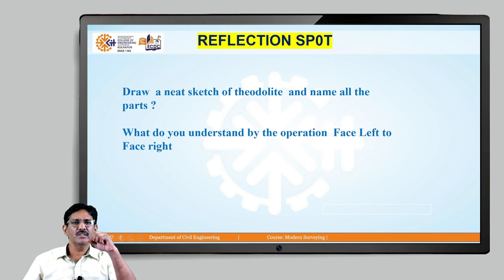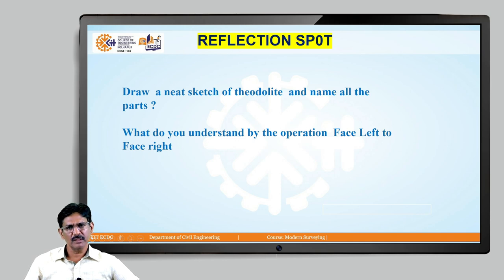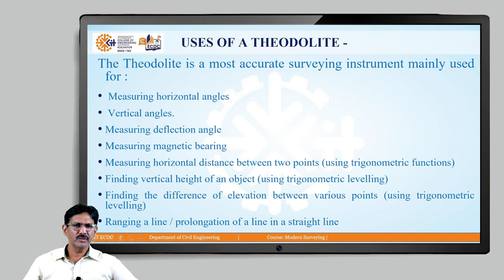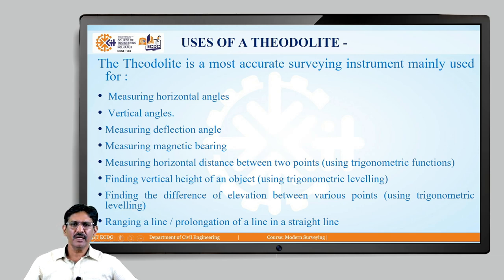In the reflection spot, we should be able to draw a neat sketch of a theodolite and name all its parts: the main scale, vernier scale, clamp screw, upper tangent screw, lower tangent screw, upper clamp, lower clamp, altitude bubble, and vertical clamp. The theodolite has multiple applications: measuring horizontal angles, measuring vertical angles, measuring deflection angles, measuring magnetic bearing, measuring horizontal distance between two points using trigonometric functions, finding vertical heights of objects, finding difference in elevation between points (all discussed in trigonometric leveling), and ranging or prolonging a line in a straight direction.